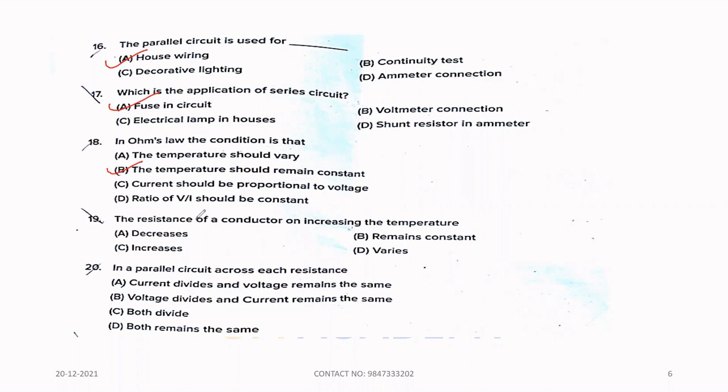Nineteenth question, the resistance of a conductor on increasing the temperature, the resistance value will increase with temperature. Option C is the correct answer. Twentieth question, in a parallel circuit, across each resistance, the current divides and the voltage remains same. Option A is the correct answer.